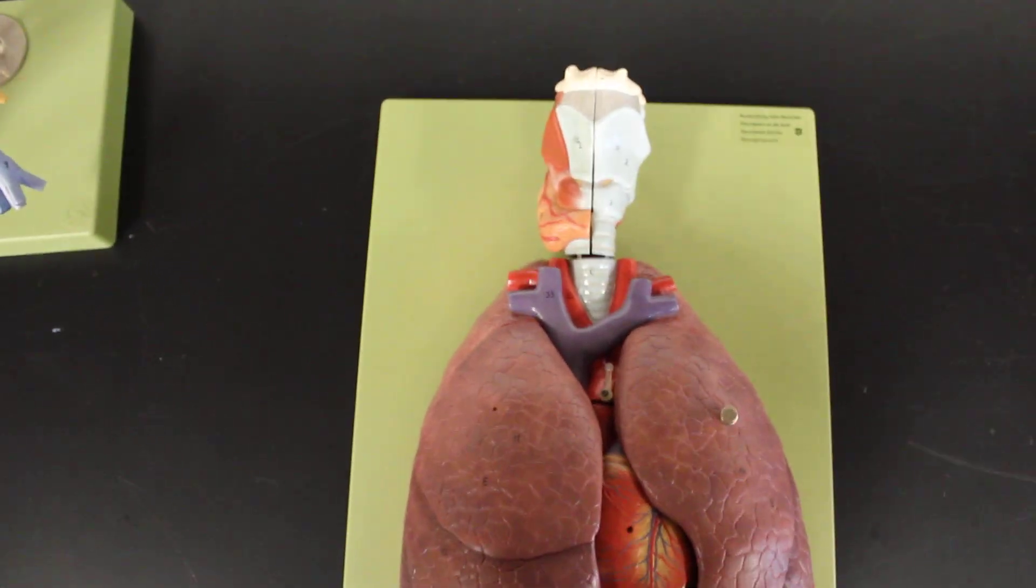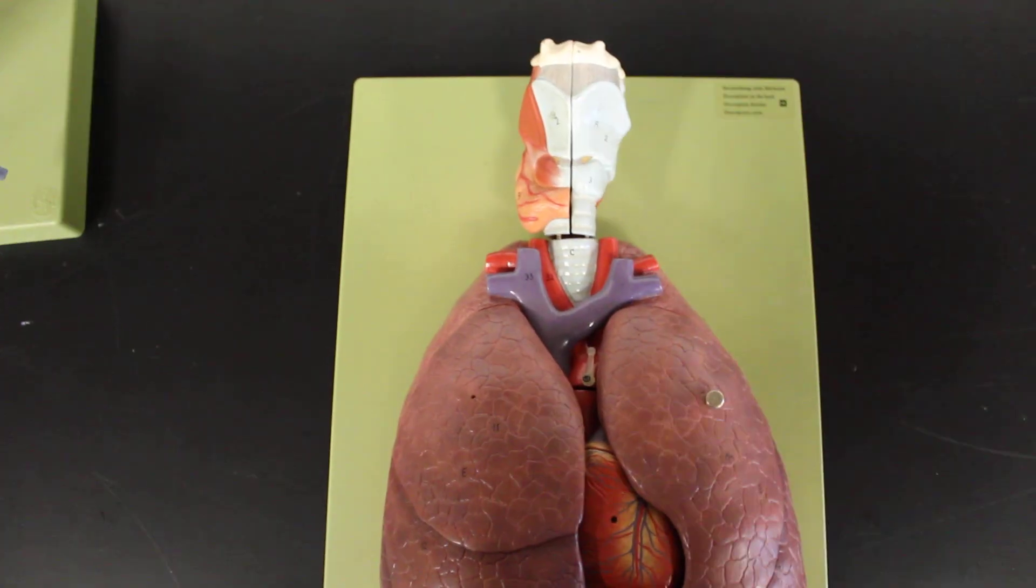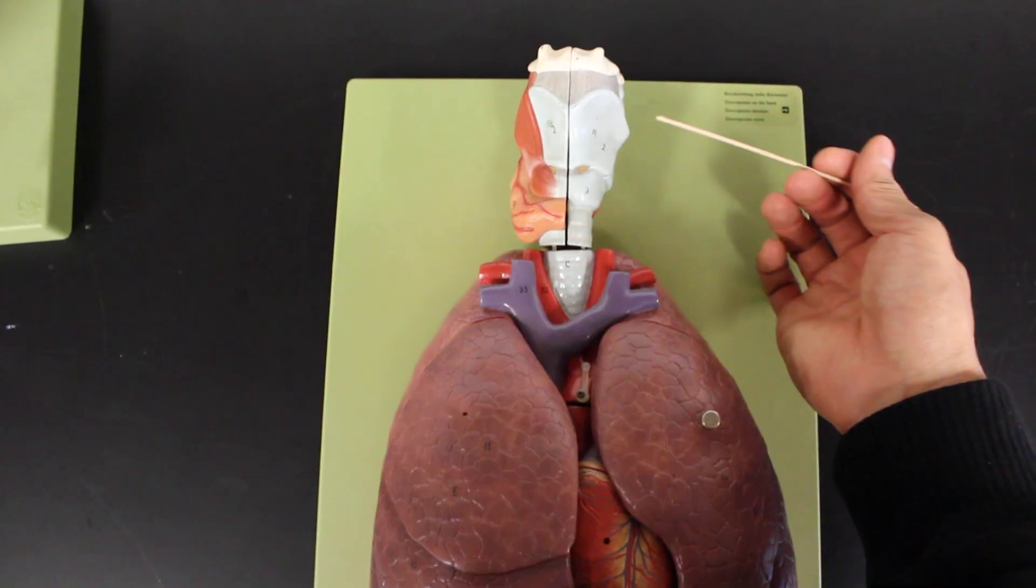As we take a look at this model, this is a complete model with both lungs and heart. But we start off here with the larynx. And as we take a look at the air coming in from the larynx, we'll again notice the different cartilages here.